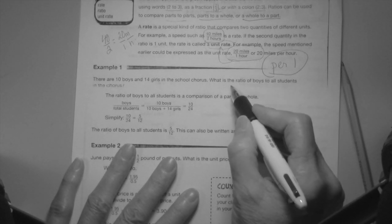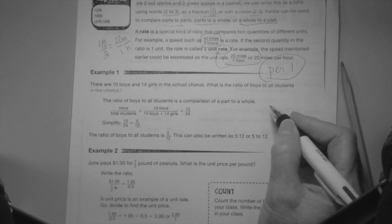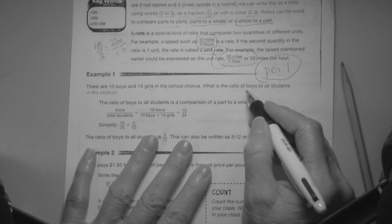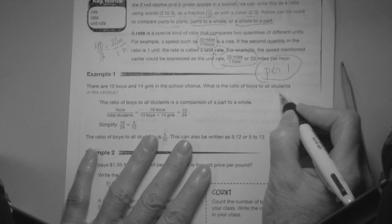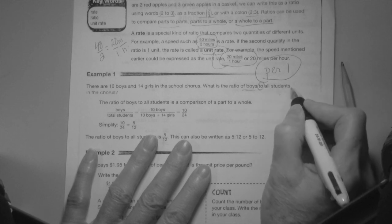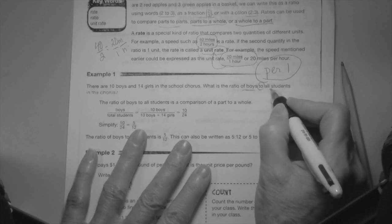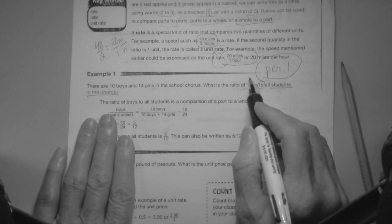Let's try the example. There are 10 boys and 14 girls in the school course. What is the ratio? This is what I suggest on any kind of word problem: you underline the key facts. What is the ratio of the boys to all the students in the course?